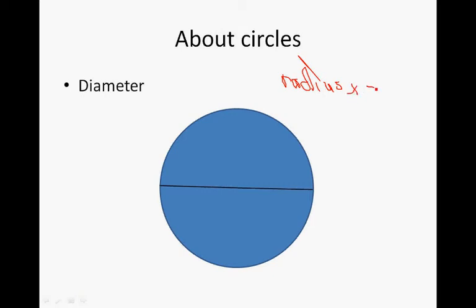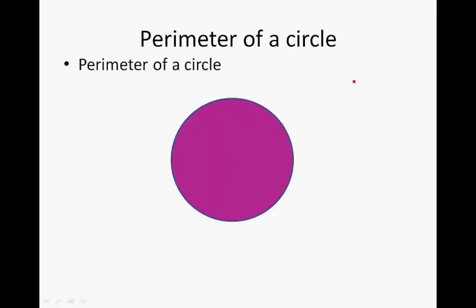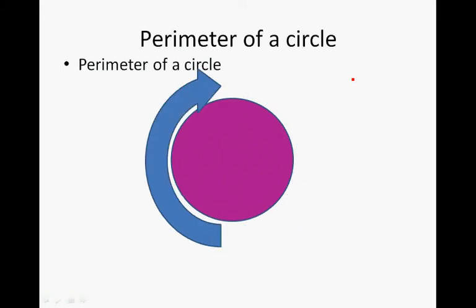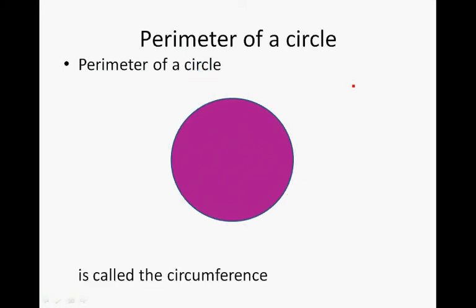Radius times 2 is called the diameter. The perimeter of a circle, perimeter all around the circle, is called the circumference. So we will not refer to it as a perimeter of a circle anymore, but we will call it a circumference from now on.